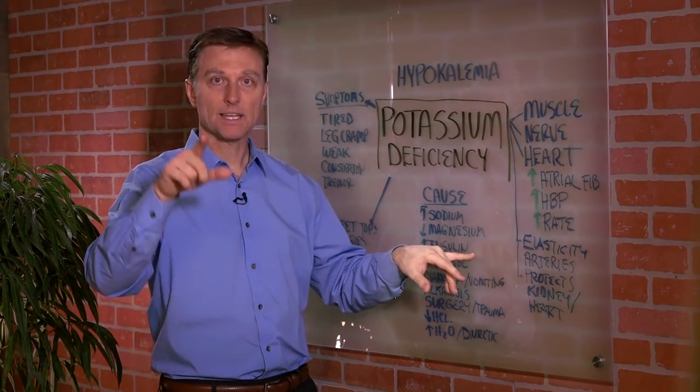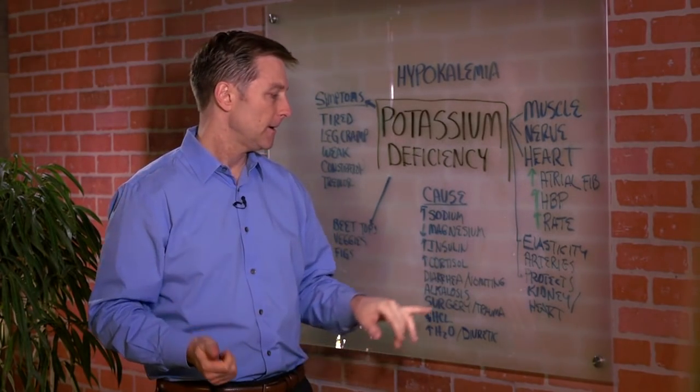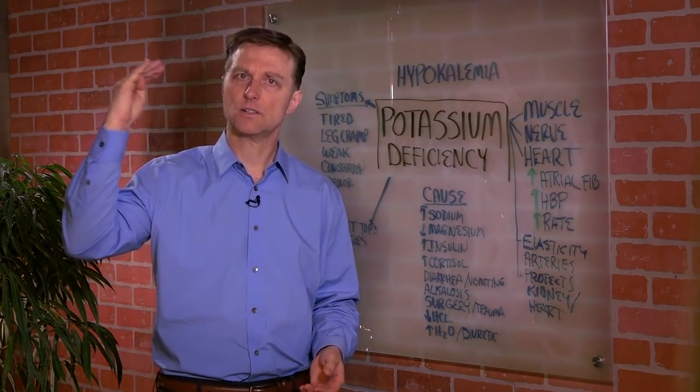Too much sugar from the spike insulin will actually deplete potassium. Too many refined carbs will do it. That's why if you consume a lot of sugar, all of a sudden your pulse rate starts going higher.